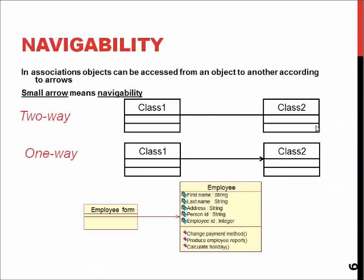This logic is used everywhere. Additionally, an arrow means that some class may have access to information on the other class, but not the other way around.